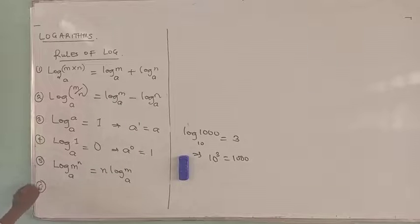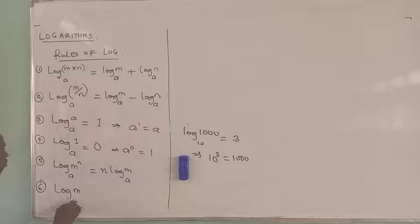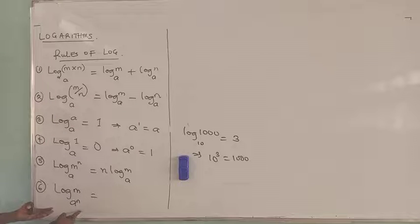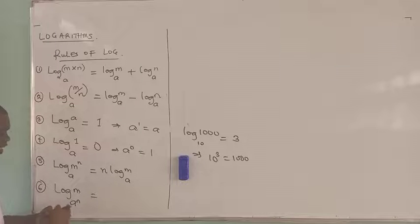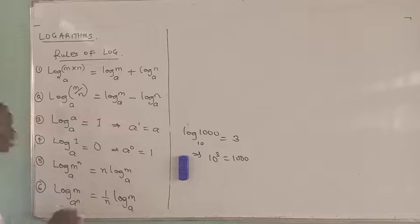The sixth rule asks: what if the power is not on the number of the log, but on the base of the log? This one says that the power of the base can also come to the back. However, when it comes, it will come as a reciprocal. So this is going to give us 1 over N times log M base A.